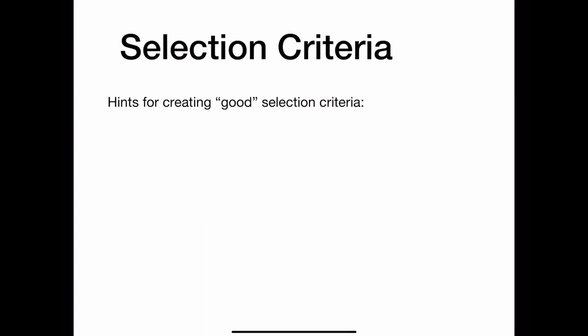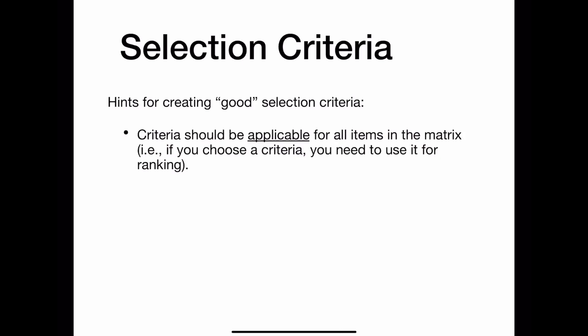Overall, here are some hints for selecting good criteria for your designs. First, the criteria should be applicable to everything in the matrix. There's no sense in comparing different music players and asking them how well they can dance, and there's no sense in having robots that can clean your house asking them how well they can do your math homework. So all of your criteria should be applicable to the designs at hand.